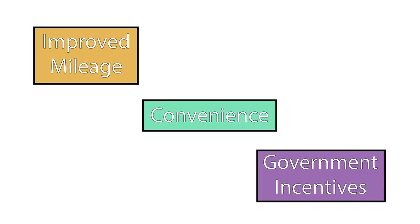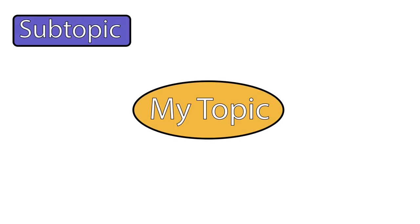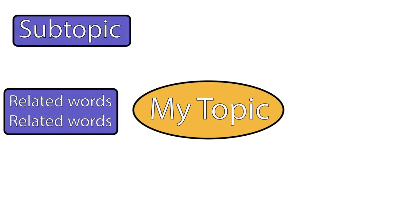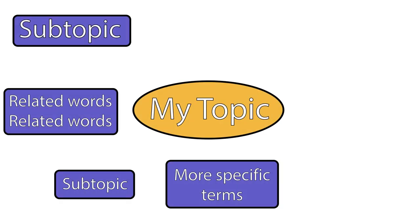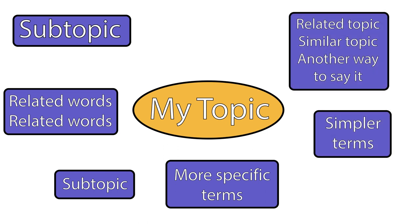For example, some synonyms for electric car might be low emissions vehicle, green vehicles, and hybrid car. Some synonyms for purchase might be purchasing decisions and consumer choice. You could also use related terms like improved mileage, convenience, and government incentives. The goal here is to think of as many different words and phrases to describe the main ideas in your topic as you can. This will ensure that you aren't missing out on good resources just because they use different words to describe your topic.